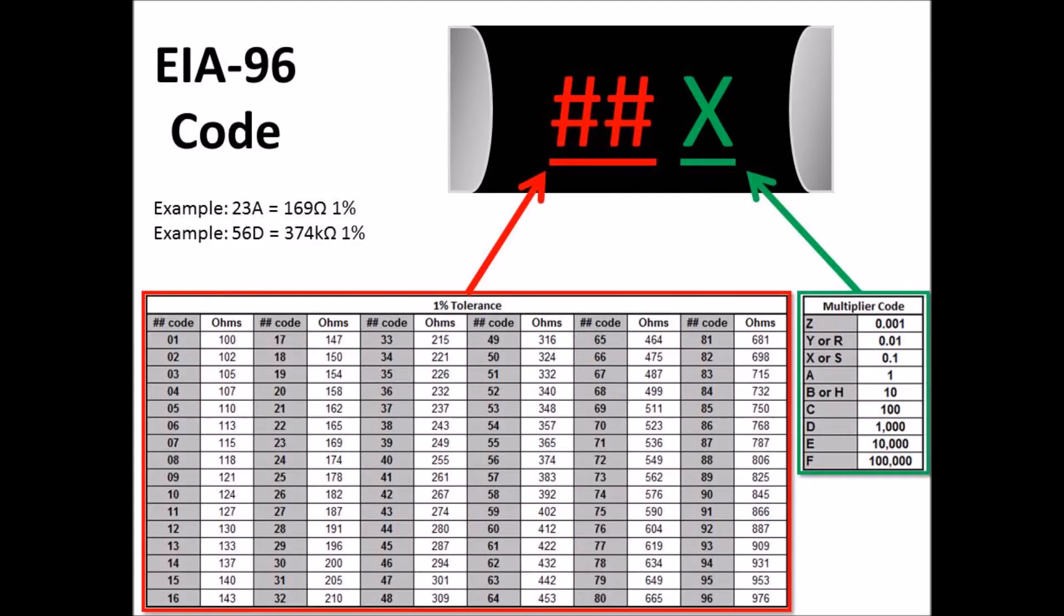Then you have the EIA 96 code, which is a 1% tolerance. The first two numbers equal a cross-reference to another value, and then the third digit is a letter which is a multiplier code. So the example I give is 23A. 23 cross-references to 169, and then A is the multiplier of 1, so you've got 169 times 1, which equals 169 ohms.